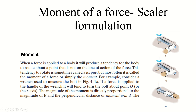In this figure you may see a wrench, and a force is applied on the handle of this wrench. The wrench has a perpendicular distance, or moment arm, d. When we apply the force on the wrench it produces a turning effect, and the wrench is moved about a point. The definition of moment is: when a force is applied to a body, it produces a tendency for the body to rotate about a point that is not on the line of action of the force.